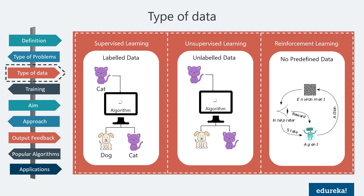The next parameter is the type of data used to train a machine. In supervised learning, the machine is provided with a labeled set of input and output data in the training phase itself — the machine already knows the expected output before it starts. For example, when classifying cats and dogs, if the algorithm is fed an image of a cat, the image is labeled as a cat. After the algorithm is trained, it is then tested using a new dataset. In the training phase, both input and output are labeled.